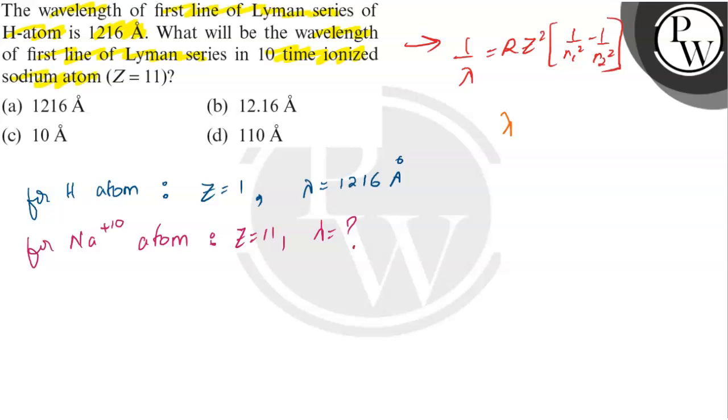What we are getting to know from here is that lambda is inversely proportional to Z square.